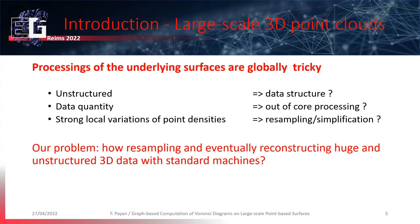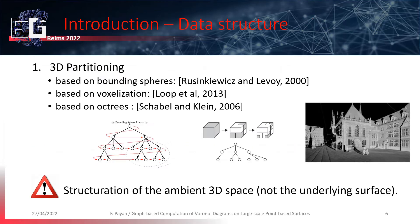And finally, point clouds require most of the time to be resampled or simplified to make the processing easier and more accessible. It was one objective during Arnob's PhD. To process our point clouds, we could have used a structure based on trees — for instance, with an octree.